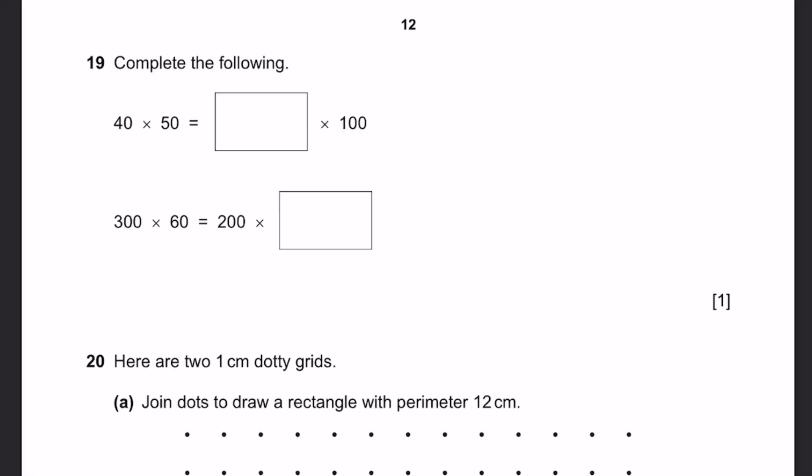Question 19. Complete the following. 40 into 50 equals something into 100. This will be 40 into 50, 2,000. That'll be something into 100. Bring 100 to this side, divide by 100 to get 20 here. 300 into 60 equals 200 into something. This will be 18,000. And 200 into something is 18,000. Bring 200 here, we just divide instead. That'll be 90. So 200 into 90.